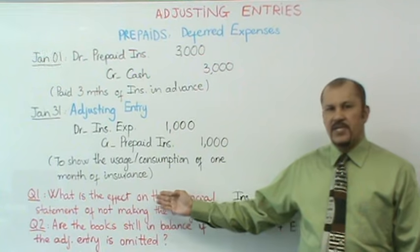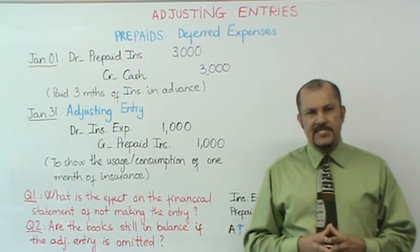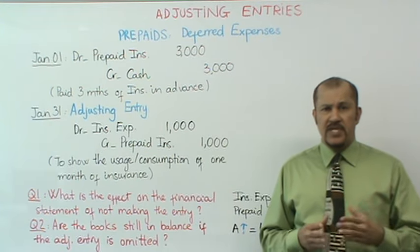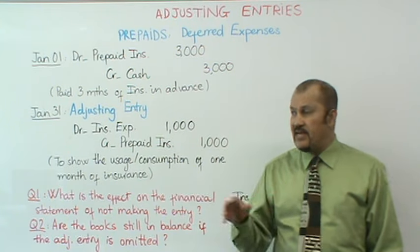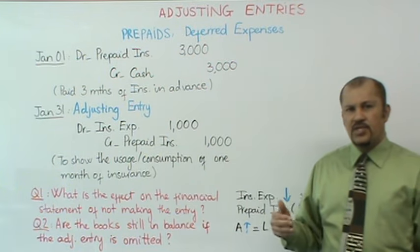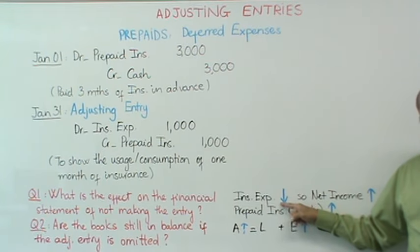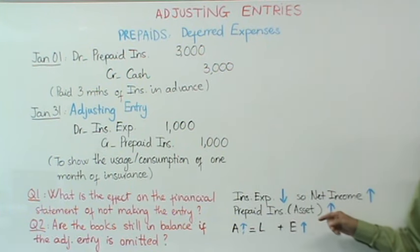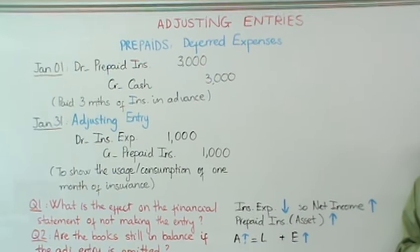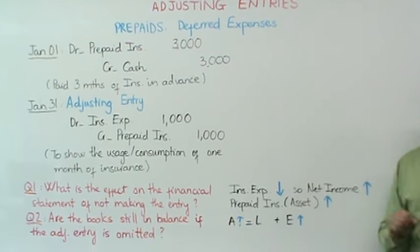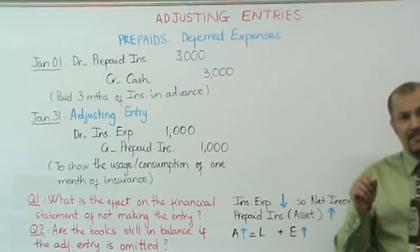What if you forgot to make the adjusting entry at the end of January? What would be the effect on the financial statements? I suggest writing out the entry first, then it's easier to answer. If you did not make this adjusting entry, your insurance expense will be understated. Any time an expense is understated, your net income will be overstated. Net income closes out into retained earnings or capital, so your equity also gets overstated. And at the same time, your assets are overstated as well — these are the ramifications on the financial statements of omitting this adjusting entry.